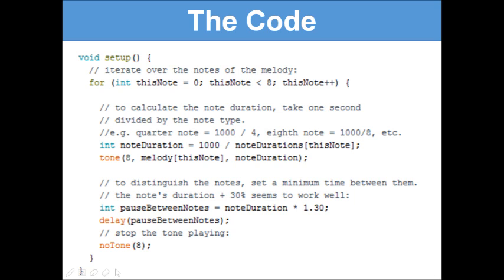So let's look at that line closer. By saying int noteDuration = 1000, we've now created an integer variable and we've set it as 1000 / noteDurations[thisNote]. Now thisNote is like 1, 2, 3, 4, 5, and noteDurations we set is like 4, 4, 8, 8, 8, so we're going to do a calculation there for each of the notes.